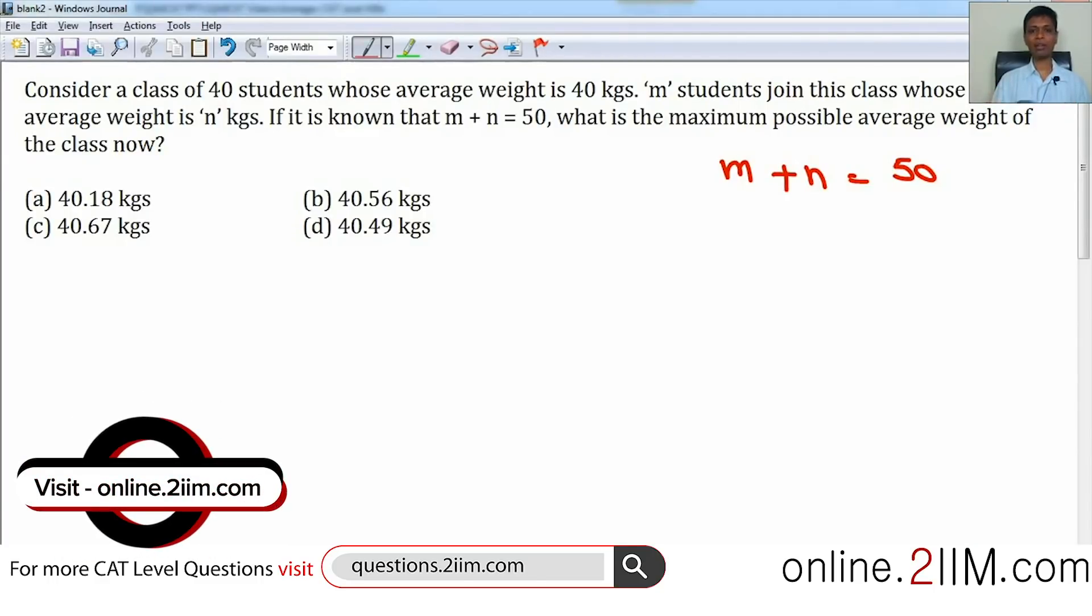The starting step for this question: we want the maximum possible average weight of the entire class, so we are better off if the overall average increases. The average would increase if n were greater than 40.